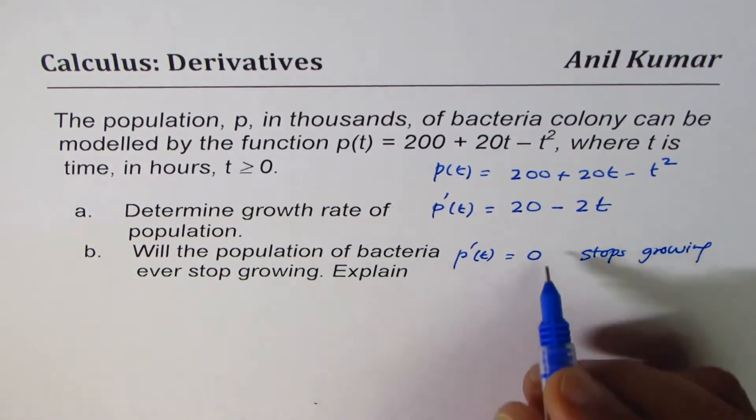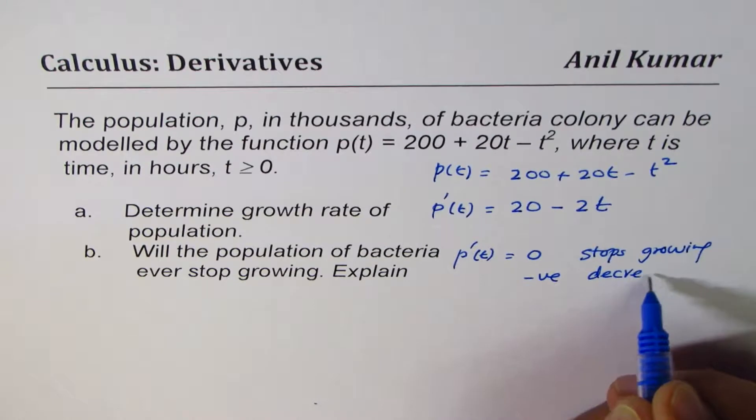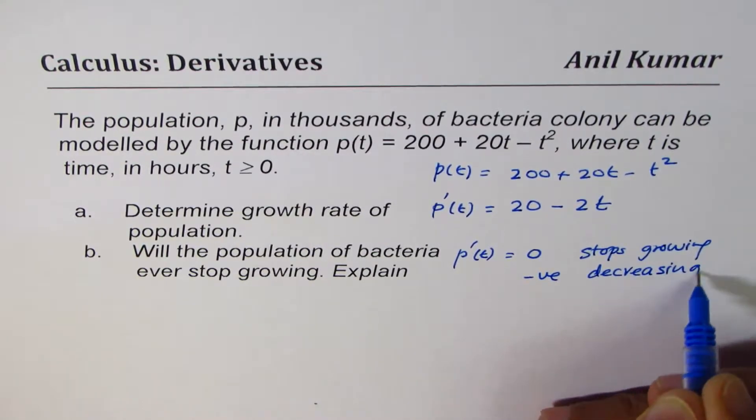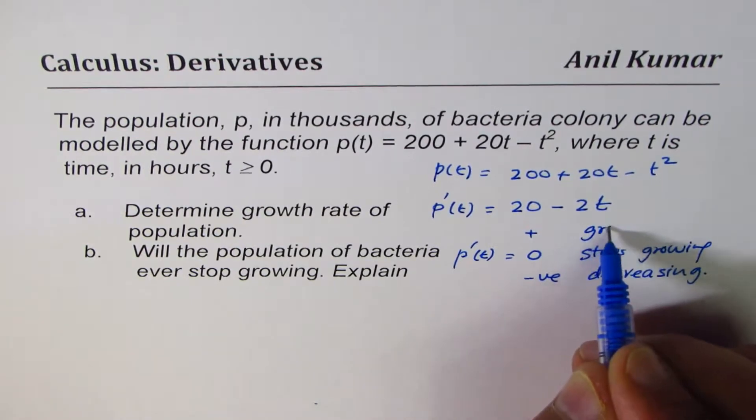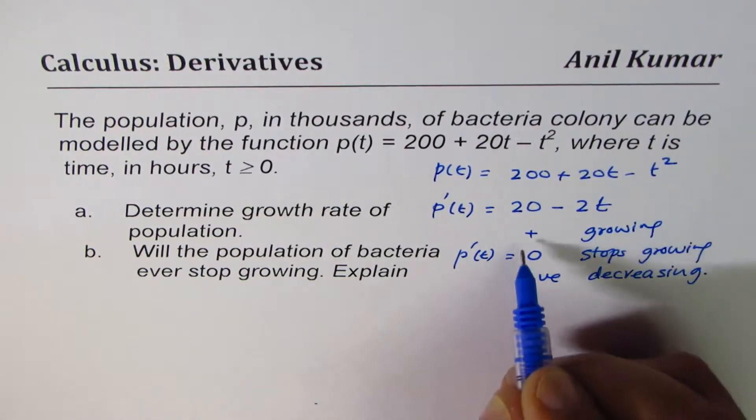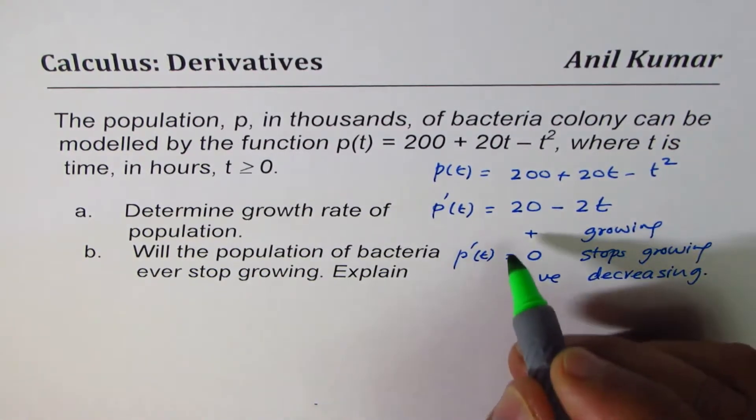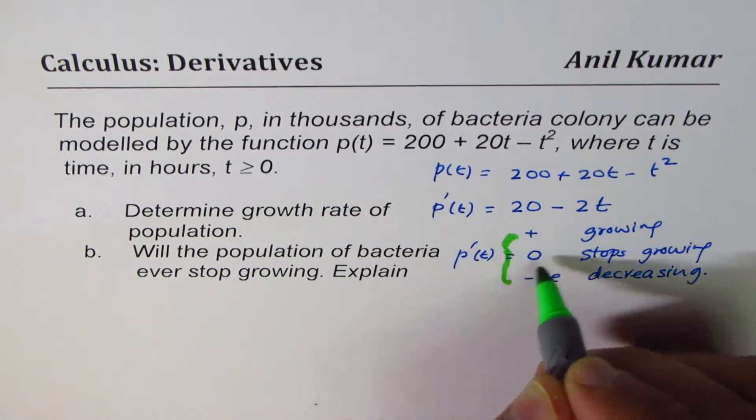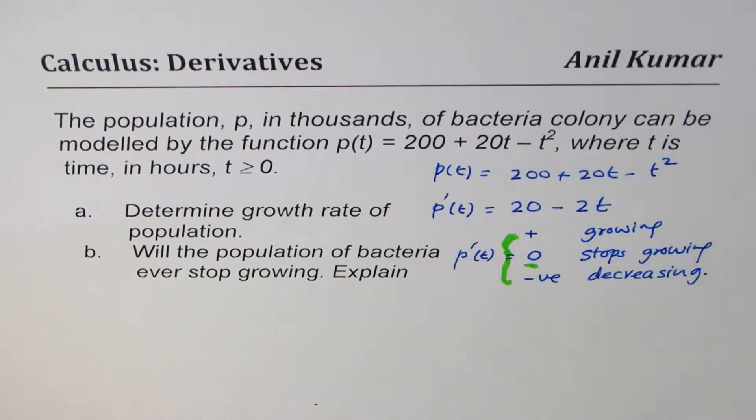If it is positive, it is growing, and if it is negative, that means population is decreasing. If it is positive, it means growing. We are interested in stops growing, so to find this solution, we can equate the derivative to 0.